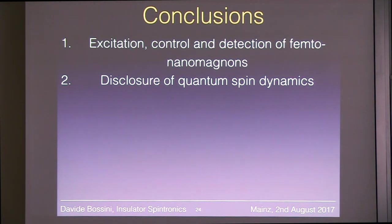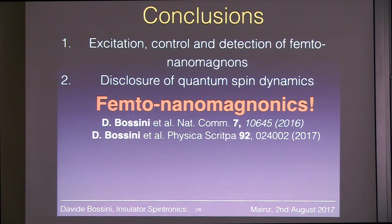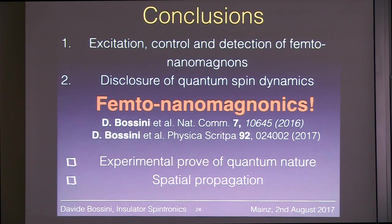In conclusion, today I've shown you that there is something called femto-nanomagnonics, and we are very excited about it because there is so much we don't know. This regime of spin dynamics is quantum, and the theory predicts that pairs of magnons are quantum mechanically entangled. We would like to devise an experiment to see experimental fingerprints of the quantum nature and possibly of the entanglement. Moreover, there is the open chapter of the propagation in space of these magnons — hard to predict and technically very challenging to measure, but something we will have to address.